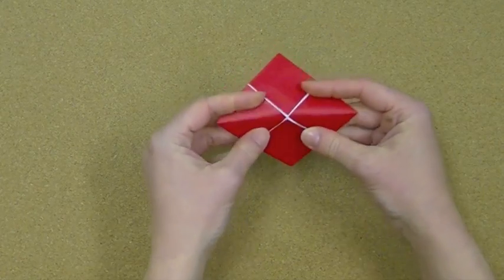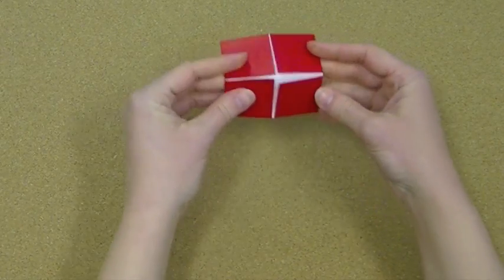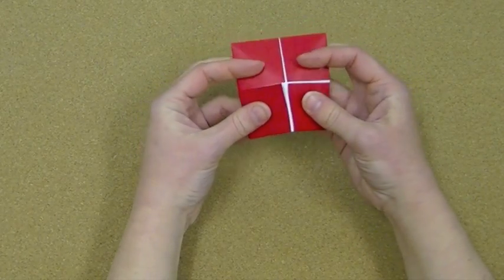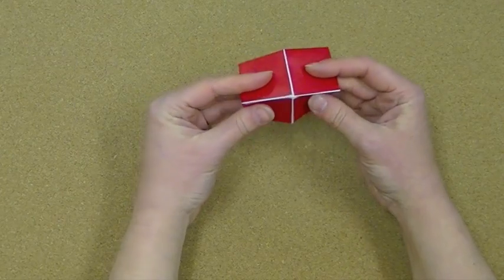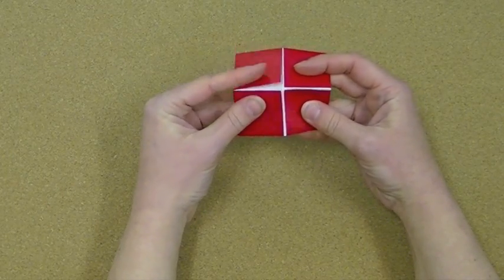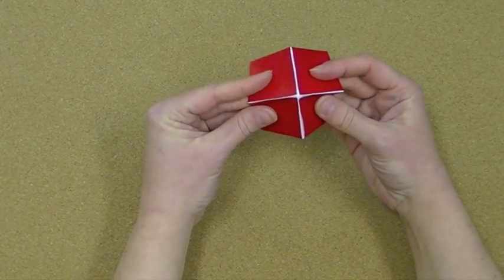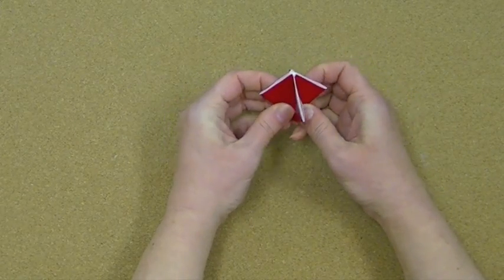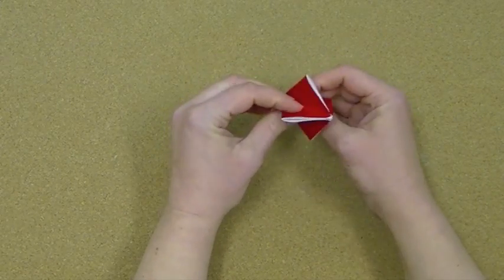And now that you have those creases, what you want to do is, if you look at it from the top here, I'm going to pinch towards the middle, putting my forefinger and my thumb in each one of those squares. I'm just going to pinch and push it together so I can get something that looks like this.